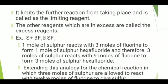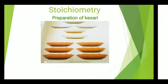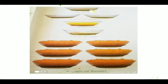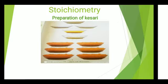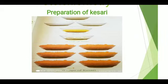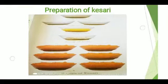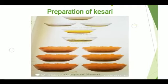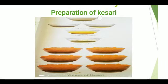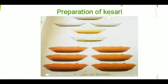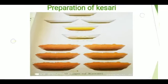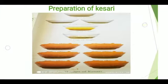For better understanding, consider the preparation of kesari. Two cups of sugar are needed for every cup of rava — meaning one cup of rava and two cups of sugar. Consider a situation where eight cups of sugar and three cups of rava are available. For three cups of rava, we need only six cups of sugar, but we have eight cups. So rava is the limiting reagent — we can prepare kesari only until the three cups of rava are used, even though we have more sugar.